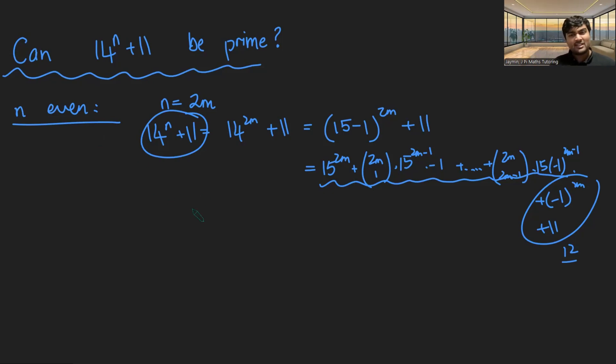For n odd, we're actually going to do something very similar. So if n is odd, we're going to do essentially the exact same thing. We can say n is 2m plus 1. And so 14 to the n plus 11, if we just kind of skip a few steps...